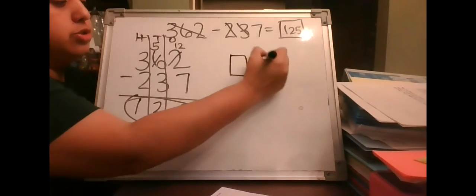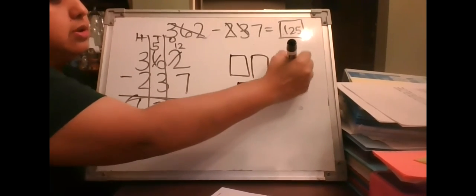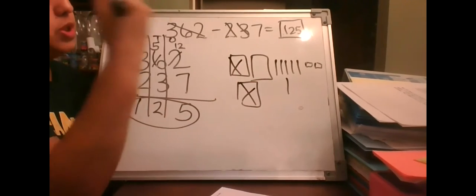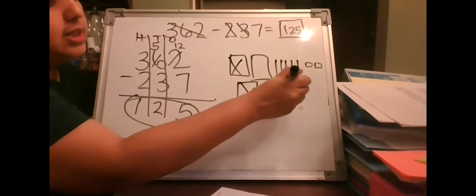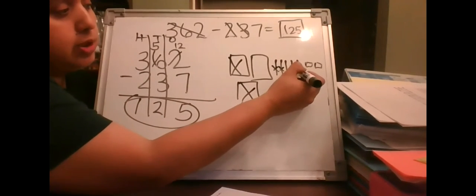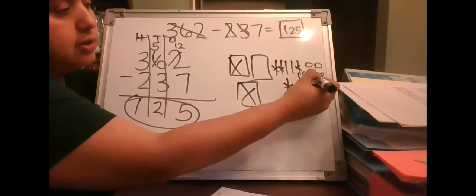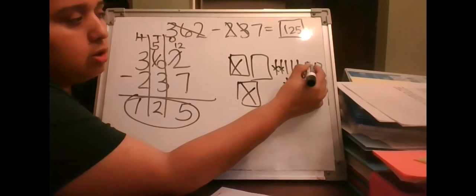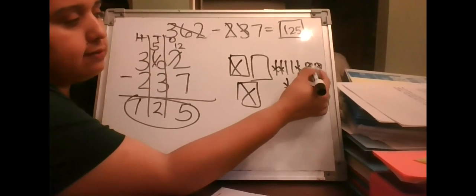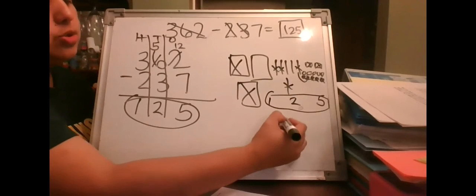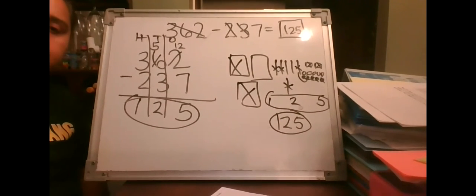Using pictures for 362 minus 237: take away two hundreds, take away three tens, then take away seven ones — but there aren't enough ones, so regroup one ten into 10 ones. Now take away seven ones, leaving five ones, two tens, and one hundred. The answer is 125. No matter which way you choose, you always get the same answer.